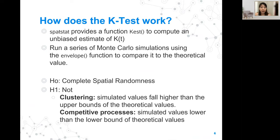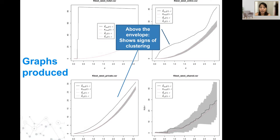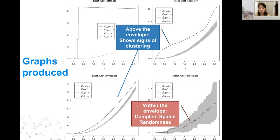If they are completely spatially random, meaning there's no relation to each other, the simulated values will fall within the envelope values. We reject the null hypothesis when the simulated values fall higher than the upper bounds of the theoretical values, meaning they're clustered. Or if they're competitive processes, the simulated values will fall lower than the lower bound. In those two graphs shown, one shows signs of clustering, and the graph on the bottom right shows complete spatial randomness because the simulated values are within the envelope.